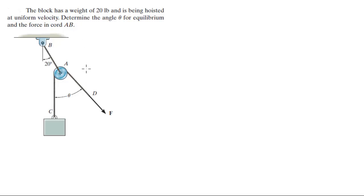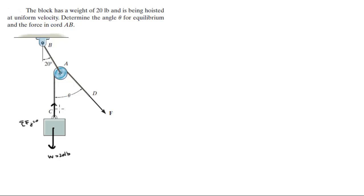Let me draw the free body diagram. The weight W is 20 pounds, which means that since the sum of the forces in the Y is zero, the tension at C is also equal to 20 pounds — the same as this tension and also the same as this tension.